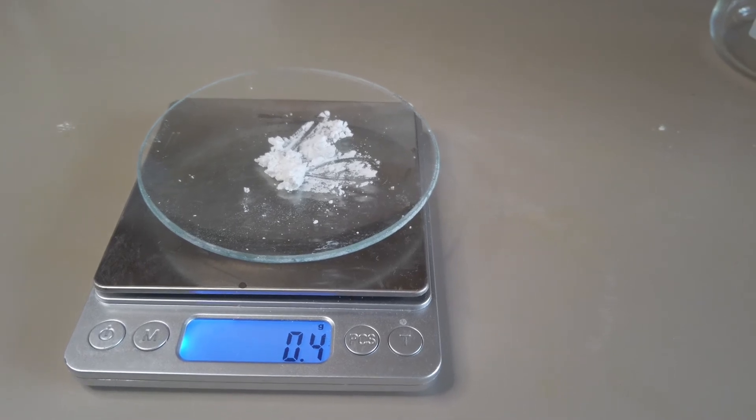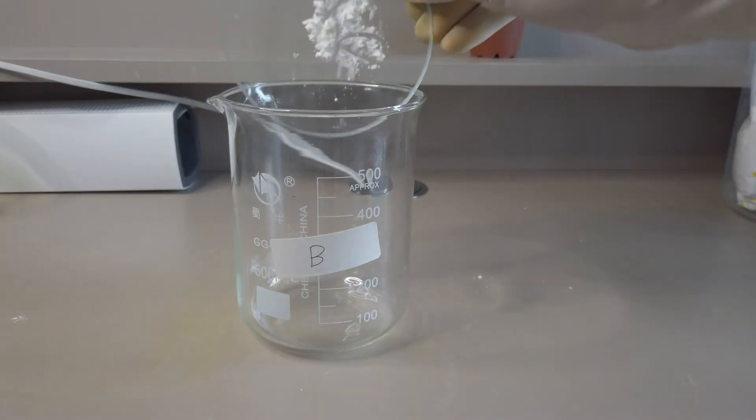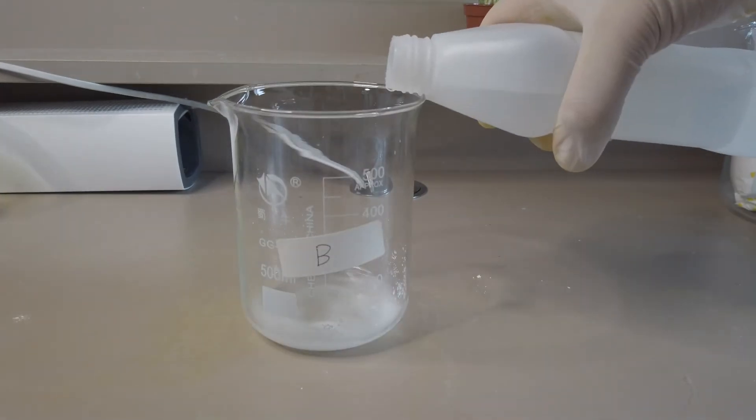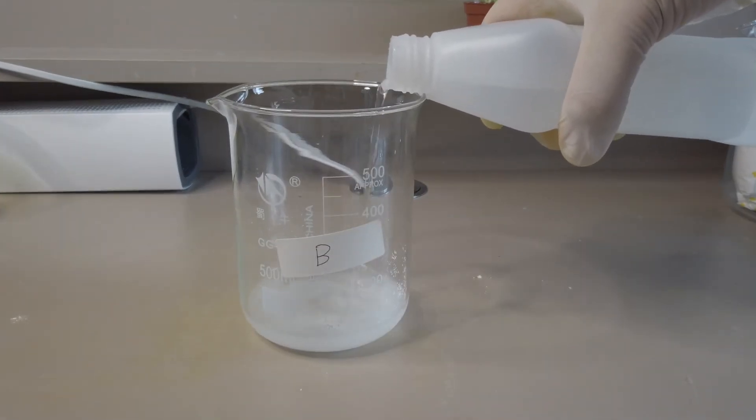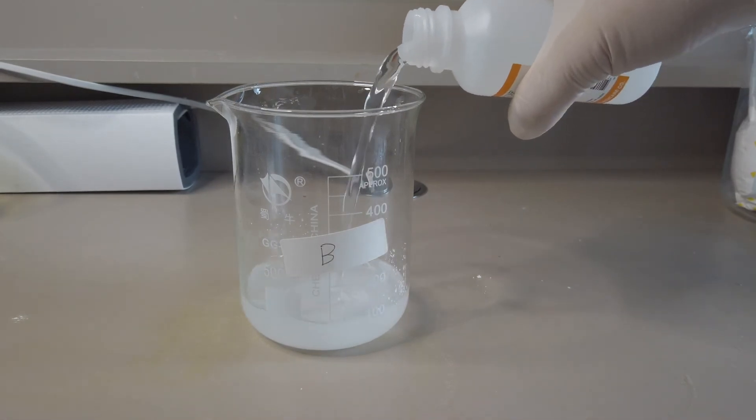We then measured out 0.4 grams of cornstarch and added it into another beaker. It was then followed by 60 milliliters of distilled water and 100 milliliters of 6% hydrogen peroxide.